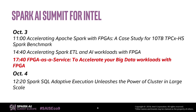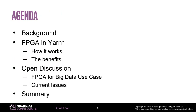We divided it into two different parts. This is today's agenda. I would like to show you the background, how it works in YARN, and why we would like to do that. First, we have some open discussion about how to use YARN and other resource managers to control your CPU or different resources — to combine and manage it as a heterogeneous platform.